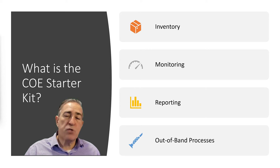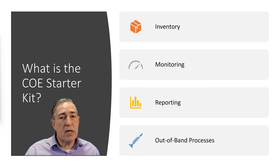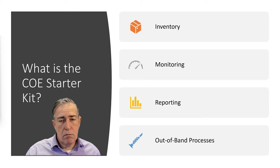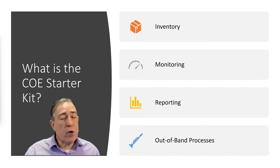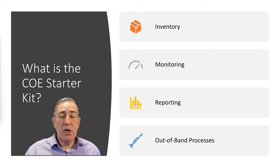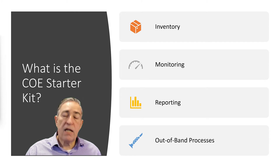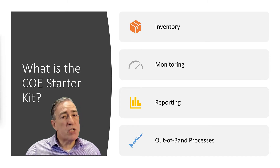There are four main areas where the COE Starter Kit will help you. First, it provides a complete and accurate inventory of every asset that's been created in your Power Platform tenant. In addition, you can monitor these assets — for example, see how long it's been since an app has been launched or a flow has been executed. We also provide detailed reporting in the form of a Power BI dashboard, in which you can not only view different aspects of the platform but can actually begin executing processes like archiving unused apps or flows. Finally, the Starter Kit includes a set of out-of-band processes — these are processes that manage various aspects of the platform and can be set to run automatically, only alerting you when an exception has occurred or when an event requiring an administrator's attention has occurred.